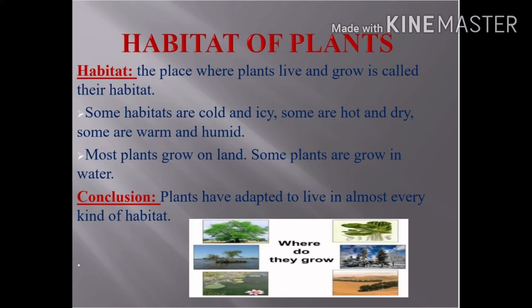Habitat of Plants. Some plants grow on land, some plants grow in water. So, the conclusion is that plants have adapted to live in almost every kind of habitat. What is habitat? Habitat is a place where plants grow. So, let's talk about the different habitats of plants.